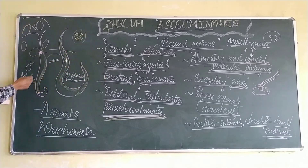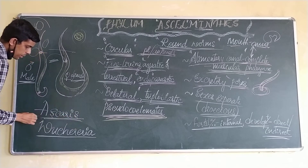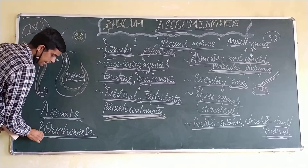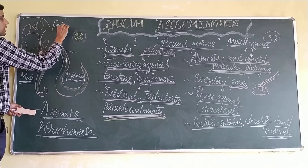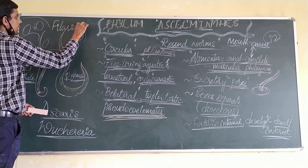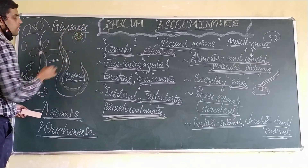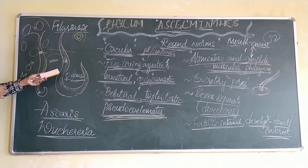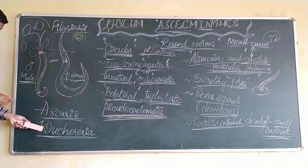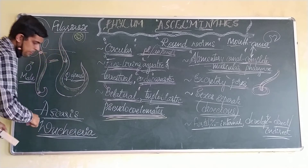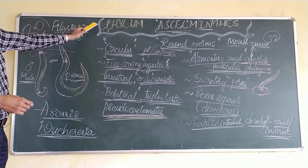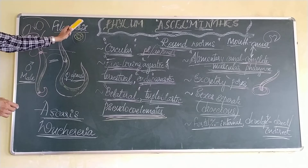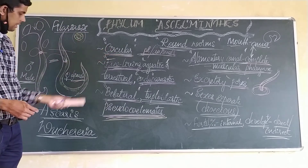Examples of Nematoda include Ascaris, which is an endoparasitic roundworm of the genus Ascaris. There is also the filarial worm, which causes elephantiasis, also called filariasis, caused by Wuchereria. These are very common examples. In exams you have to write all these important characteristics, highlighting the muscular pharynx, excretory pore, and circular body.